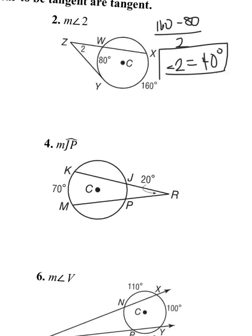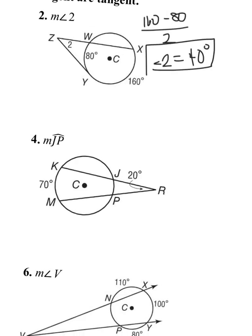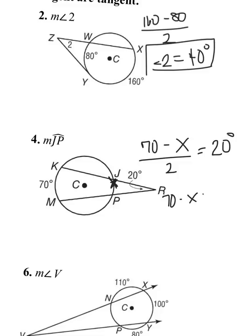Question number four: they gave us the exterior angle, but I'll set it up the same way. Large arc minus the small arc — I'll call the unknown X — divided by two equals my exterior angle. To get X by itself, multiply by two on both sides, then subtract 70 from both sides. I have negative X equals negative 30, so divide by negative one on both sides. The answer is 30 degrees.